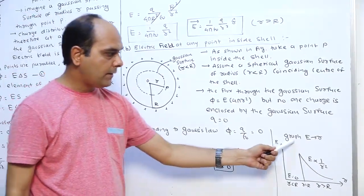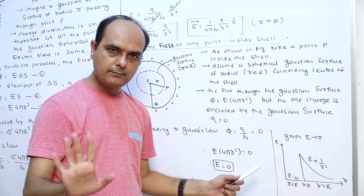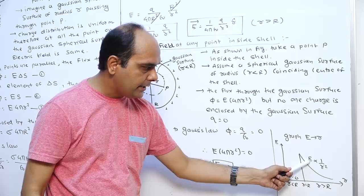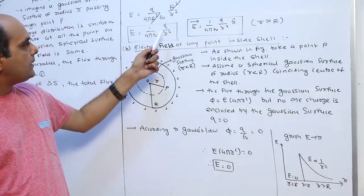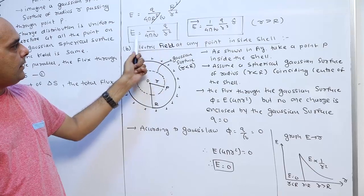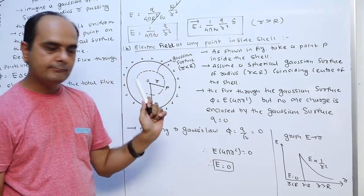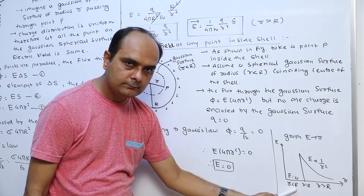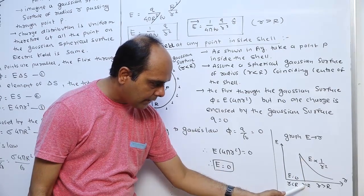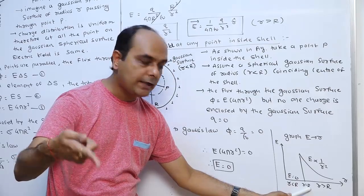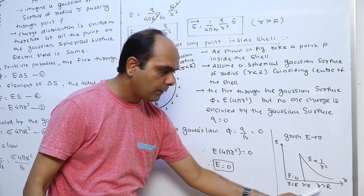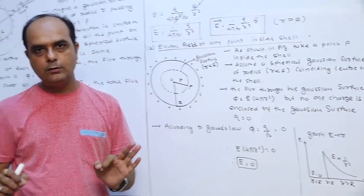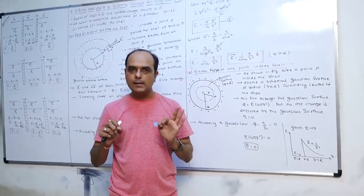Finally, plotting the graph of E versus r for a spherical shell: inside the shell (r less than R), E equals zero. On the surface (r equals R), E has its maximum value. Outside the shell (r greater than R), E is proportional to 1/r squared — that is, E and r squared are inversely proportional. This is the complete E versus r graph for a charged spherical shell.